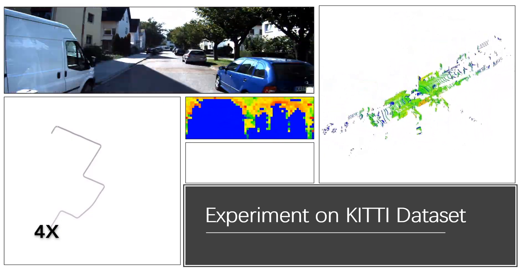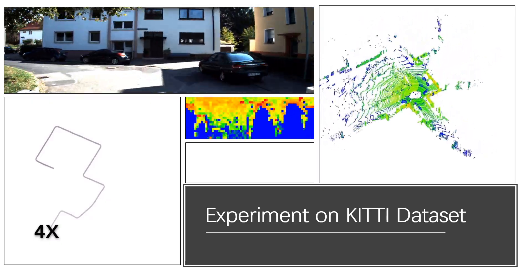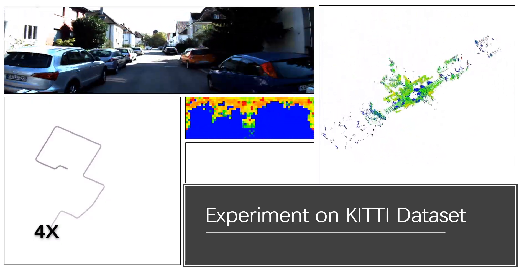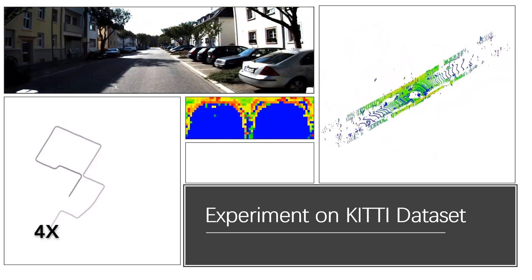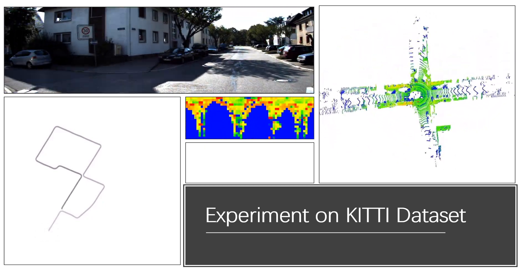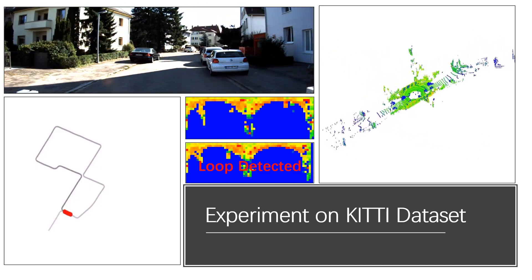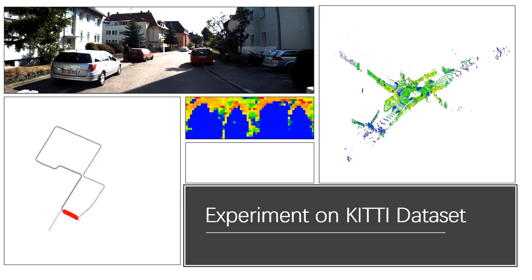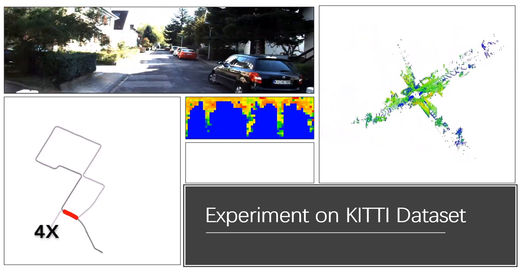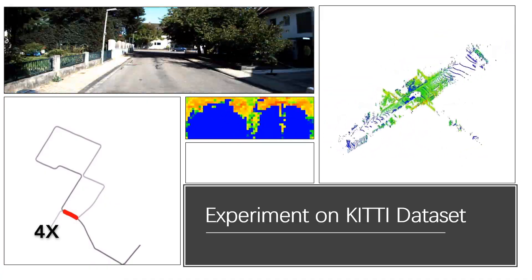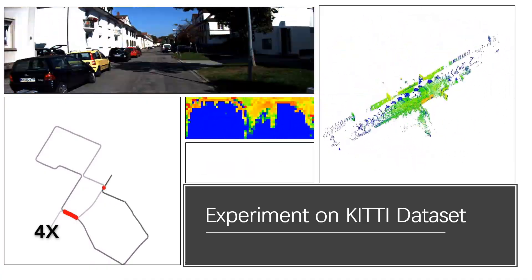In this paper, we explore the intensity property from LiDAR scans and show that it can be effective for place recognition. Furthermore, we propose a novel global descriptor called Intensity Scan Context that explores both geometry and intensity features from a laser scan to improve performance.